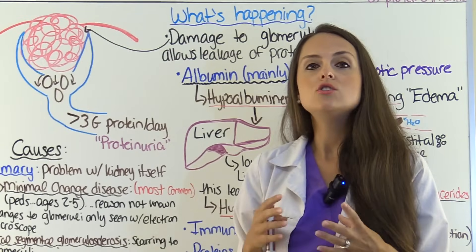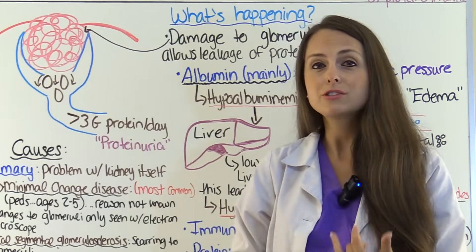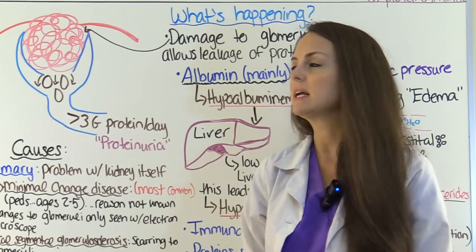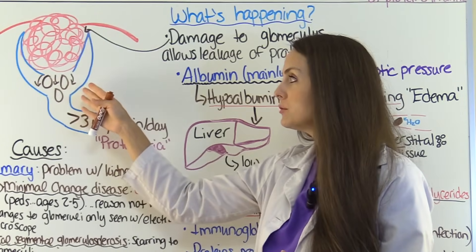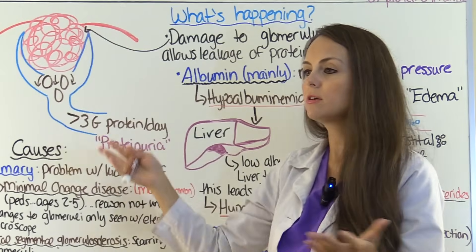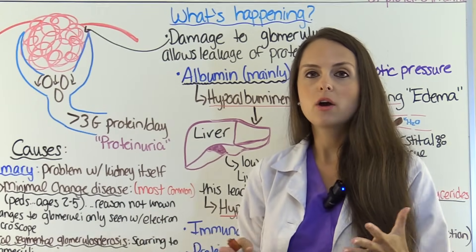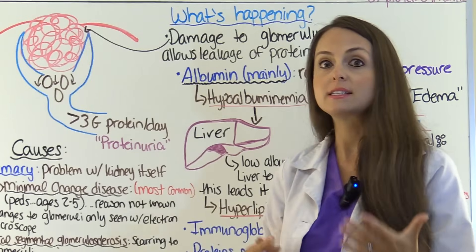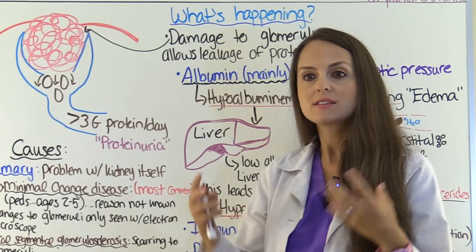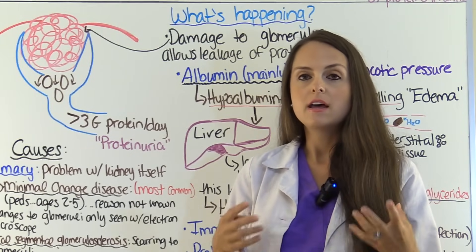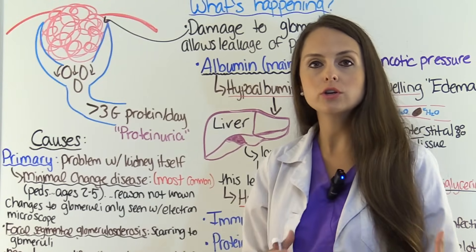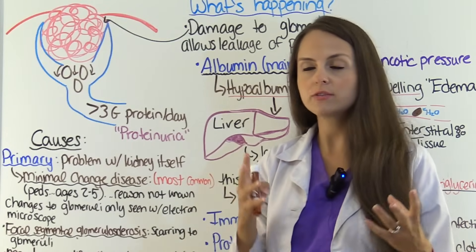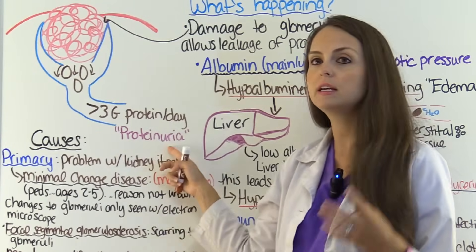Normally, the glomerulus is not permeable to proteins — they're too large to get through — along with red blood cells. But in this condition, proteins leak through, go down through Bowman's capsule into the renal tubules, and you're voiding out all this protein that needs to stay in your blood. These patients can lose three grams or more of protein per day in the urine, resulting in massive proteinuria.